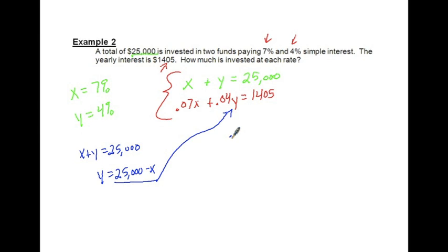I'm going to take that and just solve it for Y. Get the Y by itself. So Y is equal to 25,000 minus X. So what I'm going to do now, I'm going to take that value and plug it in for that Y right there. So when I do that, I'm going to come up with 0.07X plus 0.04.